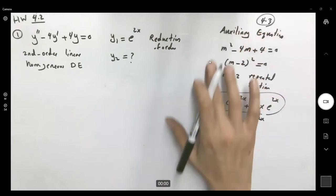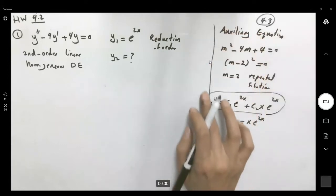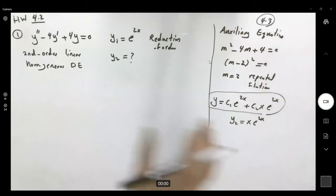So this is what we learned in 4.3. Keep that in mind. We can use it as the final checkpoint to make sure that you get a correct y2.